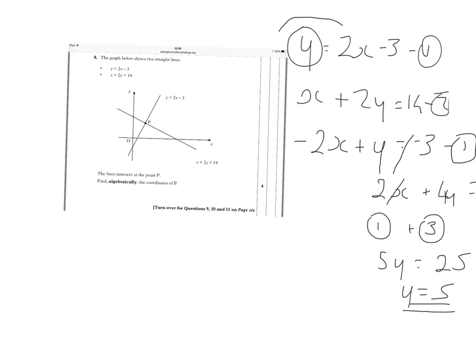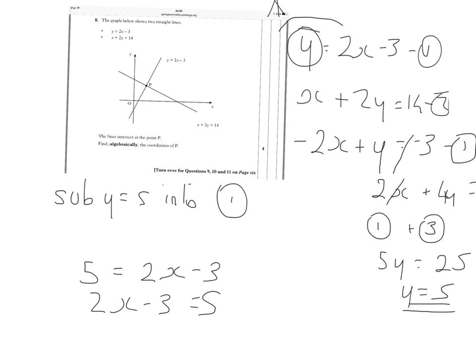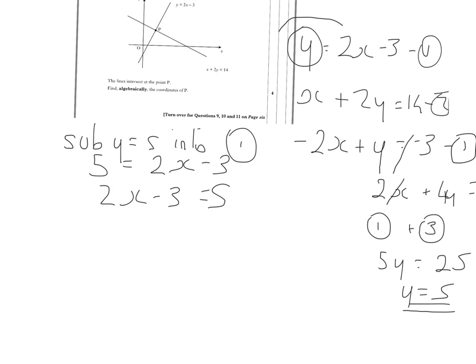I'm looking for the x coordinate, so I'm going to sub this y equals 5 into one of the equations. And it doesn't really matter which one. For me the easiest looking one to put into is equation 1. So where there is y, replace it with 5. So instead of y equals 2x minus 3, where I see y I'm going to replace it with 5. And that will be 5 equals 2x minus 3. I'm just going to swap that around: 2x minus 3 is equal to 5. Put the minus 3 across, that makes it plus. 2x is equal to 5 plus 3, which is 8. x is equal to 8 over 2, and that's 4.